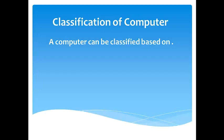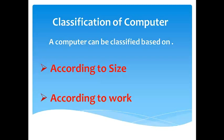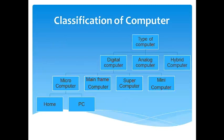A computer can be classified based on two factors. The first factor is according to size and the second factor is according to the work. Now we will see the classification of computers. The first type is digital computer, which works on digital input. Analog computer works on physical quantities such as temperature, pressure, and so on.